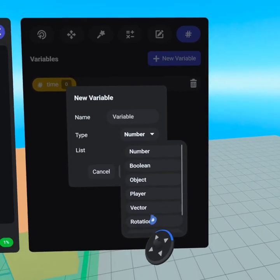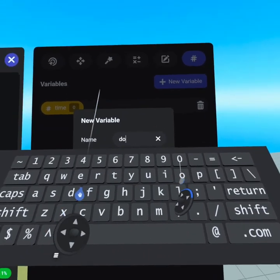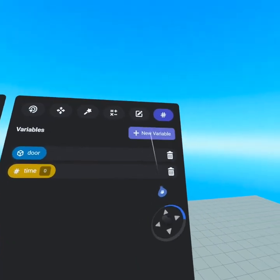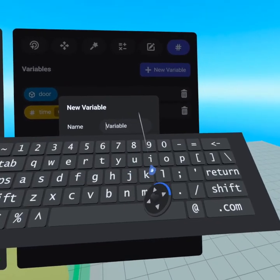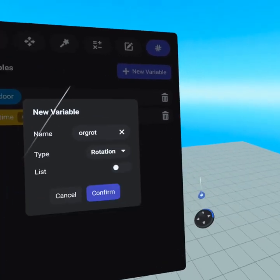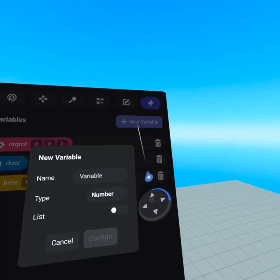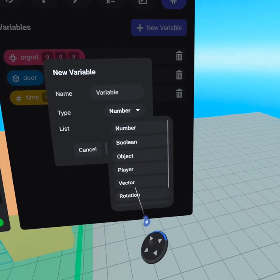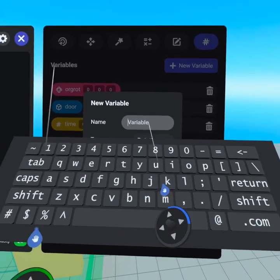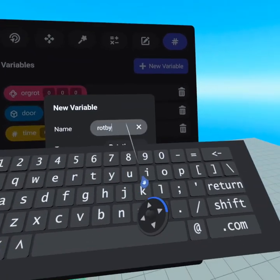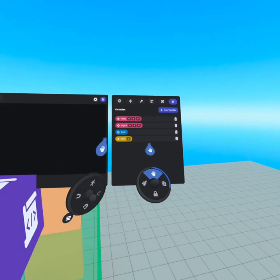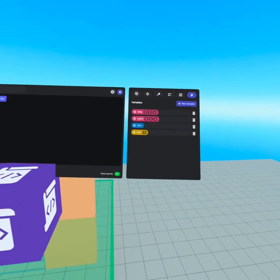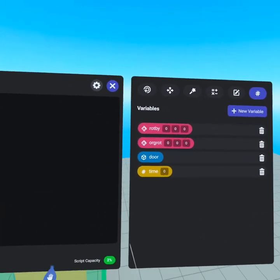We're also going to need an object variable called door, because this script runs on the trigger. Then we need a rotation variable called origin rotation, and another rotation variable called rotate by, because you could use this on different doors. Rather than doing a door that opens this way, you could have a garage door or a whole variety of doors.